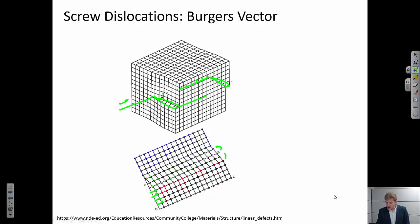So the dislocation itself is the line that is defining the edge of this plane of shear. So the burgers vector, again, we're going to follow a convention. We're going to follow a right-hand start to finish convention.